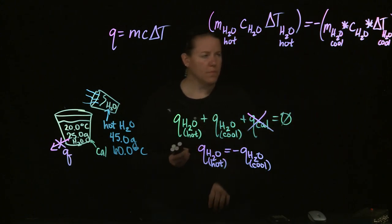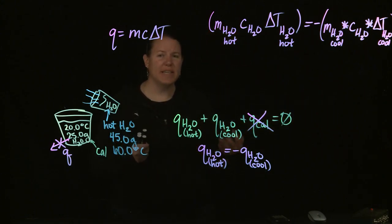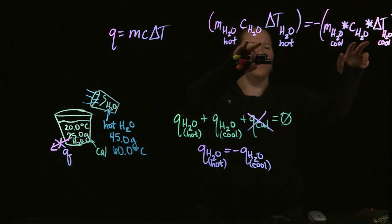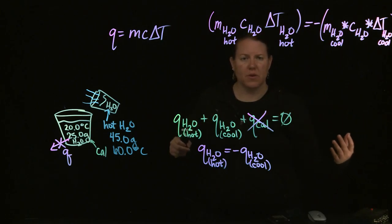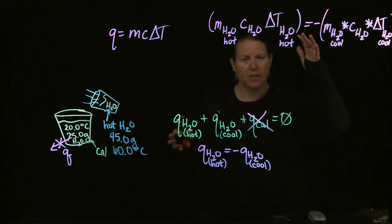So in terms of this, one of the things you can already see is that C of water is on both sides of this equation. If it's on both sides of this equation, it doesn't matter whether it's minus or not. You're going to divide by it.